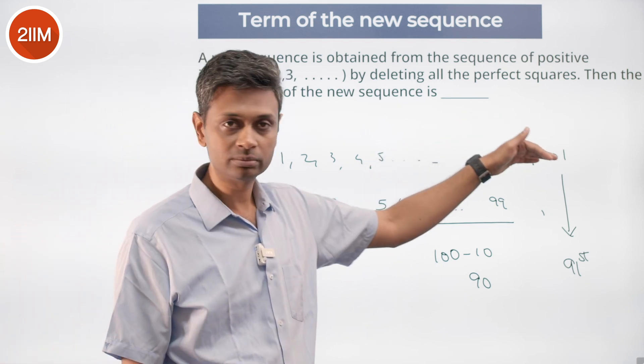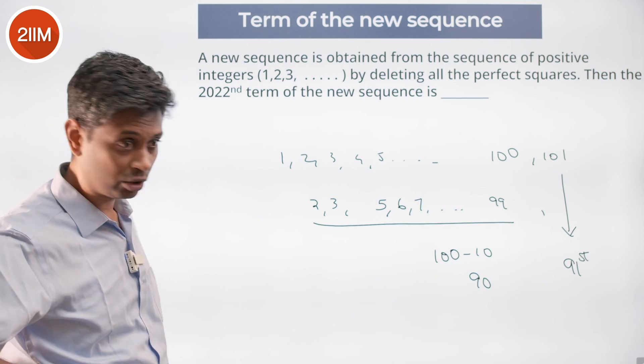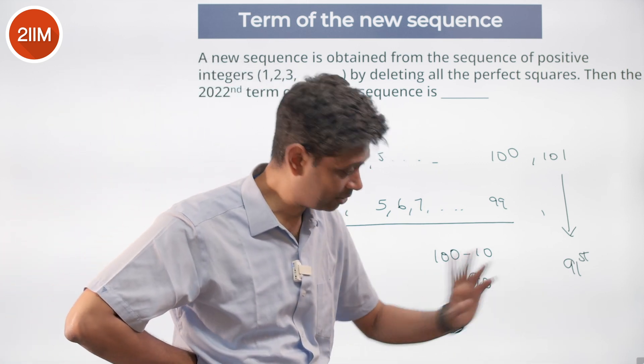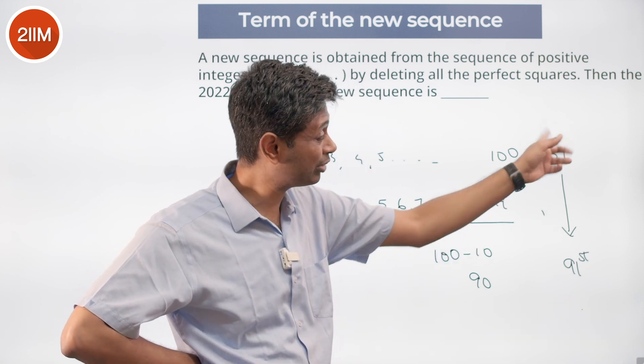n² plus 1, I can simplify like that. I am going to look at this 2022 term. I need to think about the 2022nd term here. Going from here is difficult. I am going to think about n² plus 1.